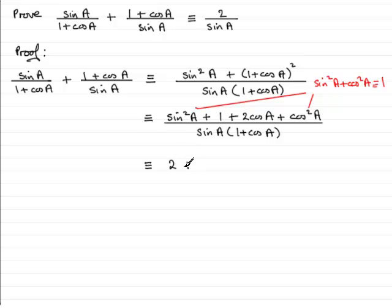2 plus 2 cos A, and that's going to be divided by sin A multiplied by 1 plus cos A.